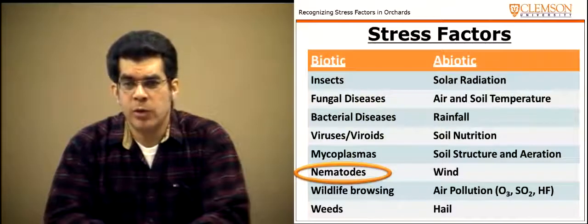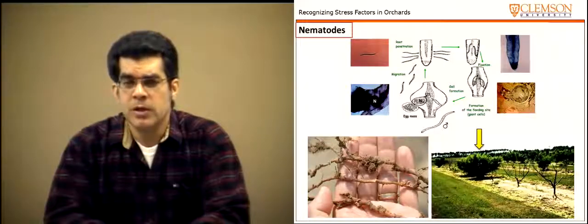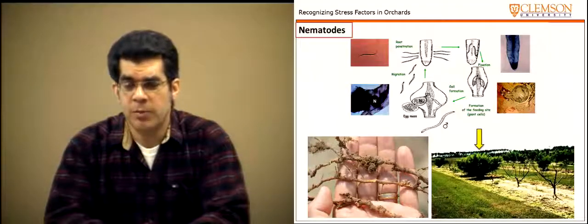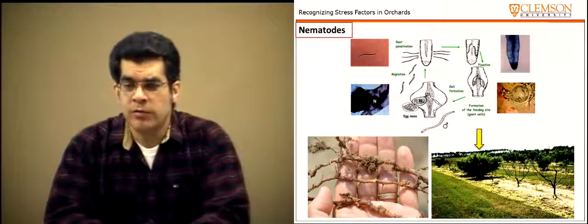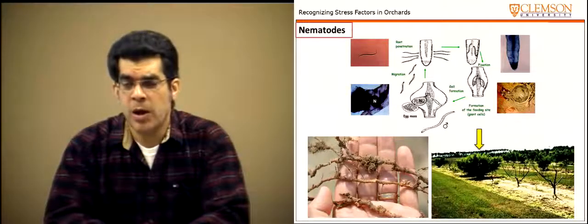In terms of nematodes, in the southeastern United States we are primarily concerned about the ring nematode, though root-knot nematode is a concern in other areas. Nematodes feed on the root system, cause galls, and force the tree to use energy dealing with the problem, compromising growth to the point where trees can die. A photograph demonstrates the benefit of using the guardian rootstock — a resistant tree thriving on a site with high ring nematode populations while susceptible rootstock trees around it are dead.